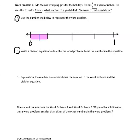Part B says, write a division equation to describe the word problem and label the numbers in the equation. We took one-fourth of a whole and divided that into two equal pieces.